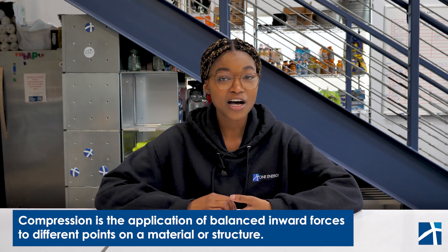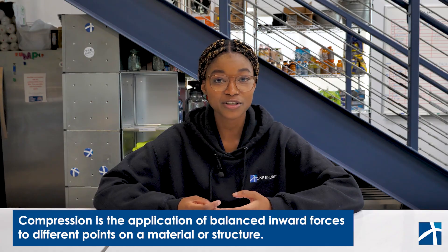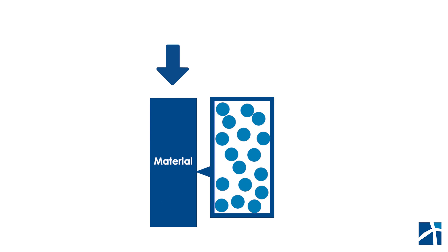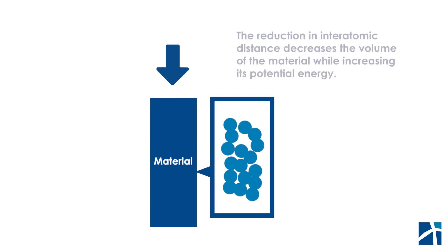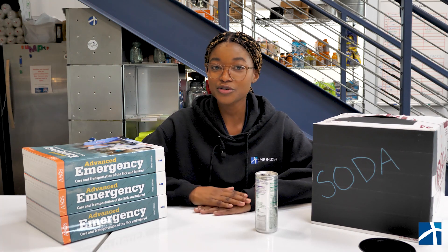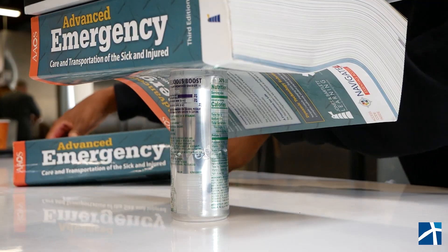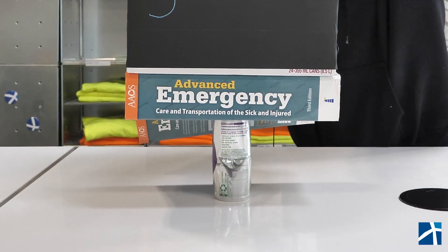The foundation below then distributes the weight of the turbine evenly across the ground. So what's the physics behind compression? At the atomic or molecular level, compression involves the application of forces that push atoms or molecules within a material together. When external forces such as gravity act on a material, the atoms move closer together, resulting in compression. This reduction in interatomic distance decreases the volume of the material while increasing its potential energy. Just like tension, every material has the ability to hold a certain amount of compression, and should the compressive forces overcome that ability, the material will undergo deformation, leading to buckling or failure.